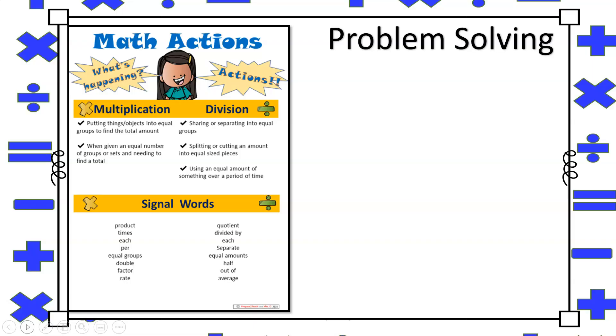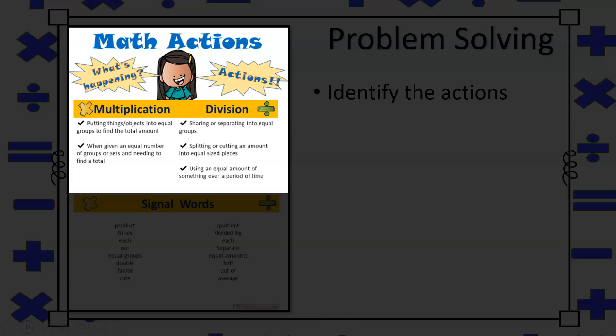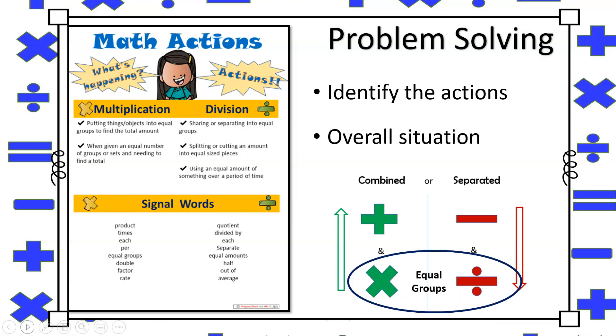Having ample opportunities to solve both types of problems is important. To help students effectively distinguish between the two, they must be able to identify the actions involved in both operations and determine the overall situation, recognizing that both operations refer to equal groups.